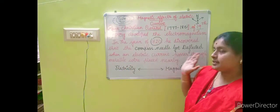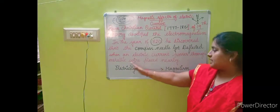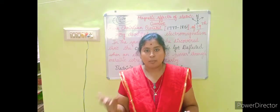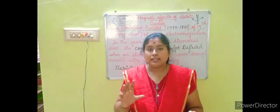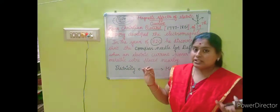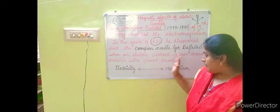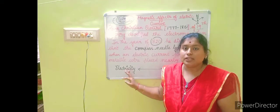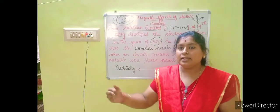When an electric current passes through a metallic wire placed nearby, there will be a deflection in the compass needle. If you pass electric current through a copper wire, there will be a deflection in the nearby compass needle. Ørsted insisted that electricity and magnetism are related concepts — electricity depends upon magnetism and magnetism depends upon electricity. These are the points the scientist conveyed through the concept of electromagnetism.